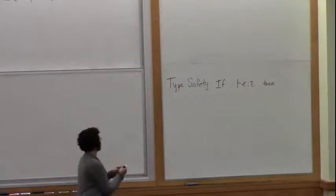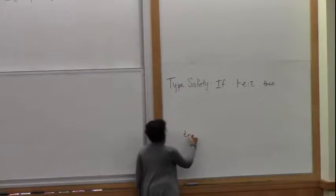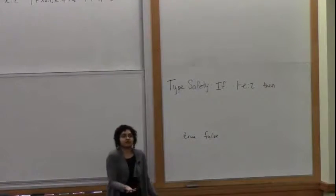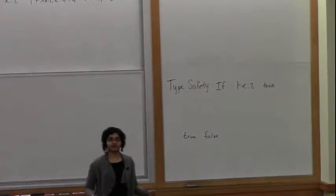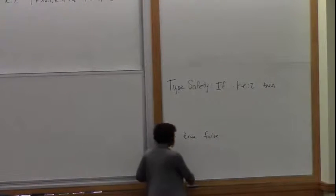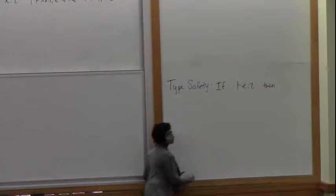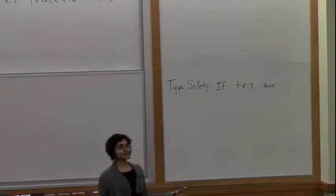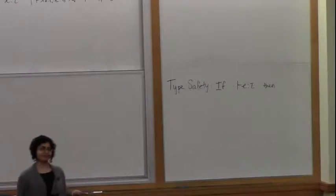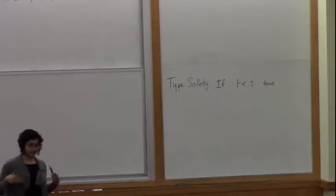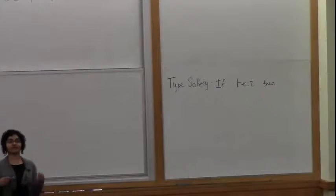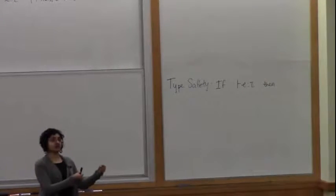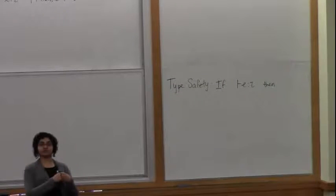We don't want something like a number being applied to a lambda — that would be a stuck thing. The point I want to make is that the way most of you are trained these days is to think of type safety as literally being progress and preservation. It is not. Progress and preservation is one method of proving type safety.